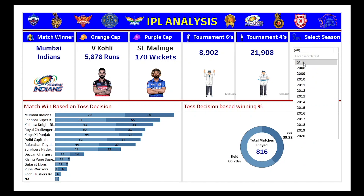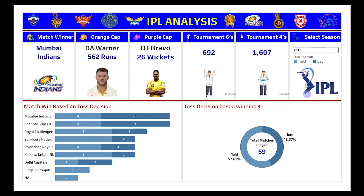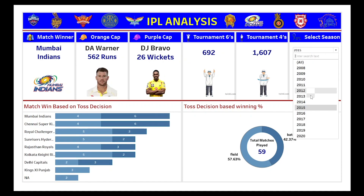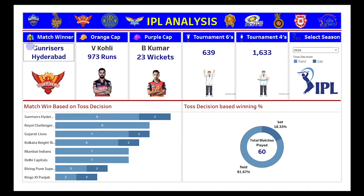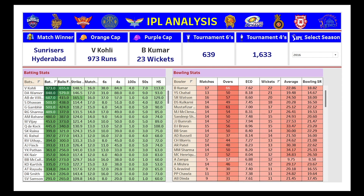The total matches played overall in this tournament are 816, since 'All' is currently selected. When we choose a specific season — say 2015 or 2016 — we get data for that particular season: the match winner, orange cap holder, purple cap holder, and the tournament sixes and fours. That covers the first dashboard.